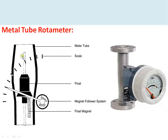Metal tube rotameters are used where transparent glass cannot be used — such as high-pressure applications or where the fluid is incompatible with glass. In a metal tube rotameter, the float moves on a guided pin and has a magnet attached to it. Movement of the float causes a needle to change position, providing direct local indication of the flow rate to the operator. Transmitters are also available so that, in addition to local indication, the flow data is transmitted to a PLC or DCS in the form of a 4–20 mA signal.